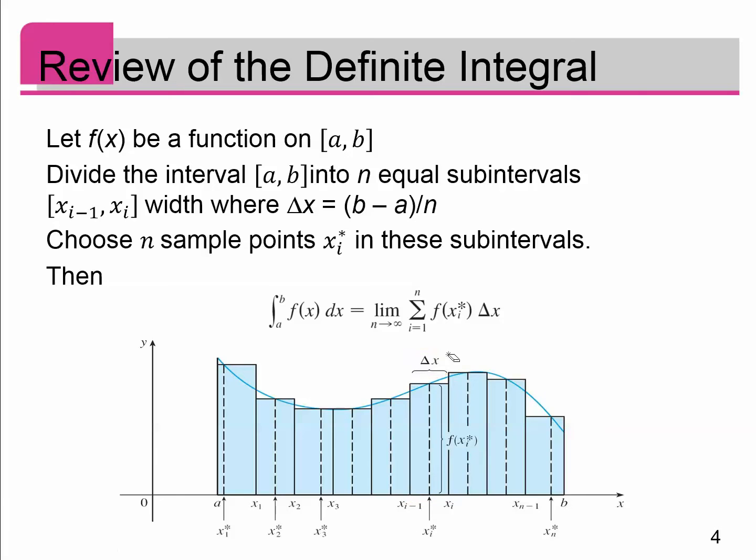Then what you do is you pick a point out of each subinterval, like this point, this point, this point, and so on, and measure the height of the curve at that point and draw a rectangle whose width is delta x and whose height is the function value at that point. F of x_1 star would be this height right here. Then what we do is we find the area of each rectangle.